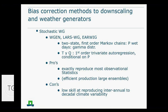You can also use weather generators. That's used often in agriculture by people who look at climate change impacts. It's much less used in hydrology, and that's mainly due to that con, because it's not very good at reproducing inter-annual and decadal climate variability, which is often important in hydrology. But it is good at exactly reproducing most observational statistics.